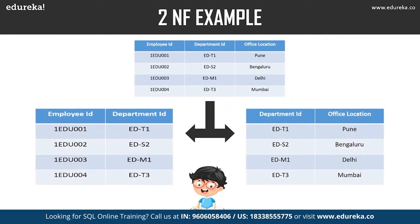To bring the table to Second Normal Form, we split the table into two parts. The first table has employee ID and department ID as columns. The second table has department ID and office location as columns. We have removed the partial functional dependency. Now, office location is fully dependent on the primary key of its table, which is department ID. I hope you have understood Second Normal Form.